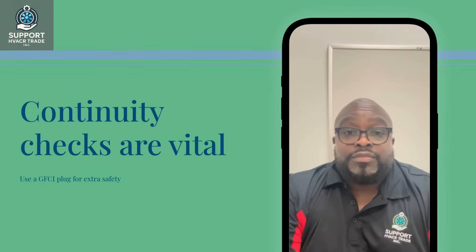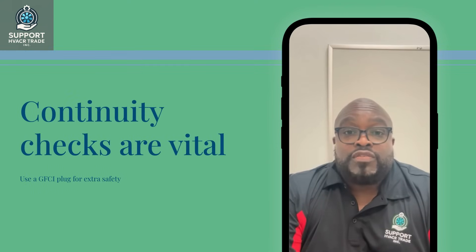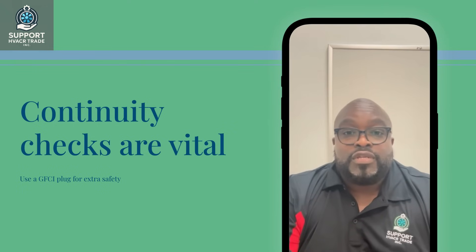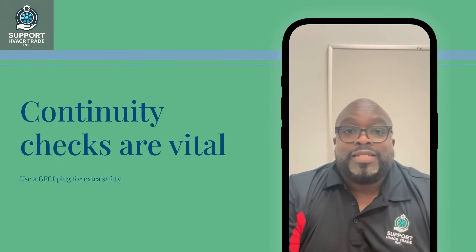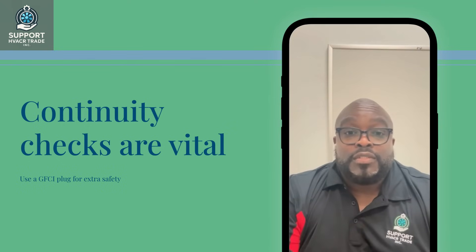Continuity checks are vital. A reading of zero ohms means a good path, while OL signals a break. Use a GFCI plug for extra safety, ensuring power is off during resistance checks. These steps protect you and your equipment.